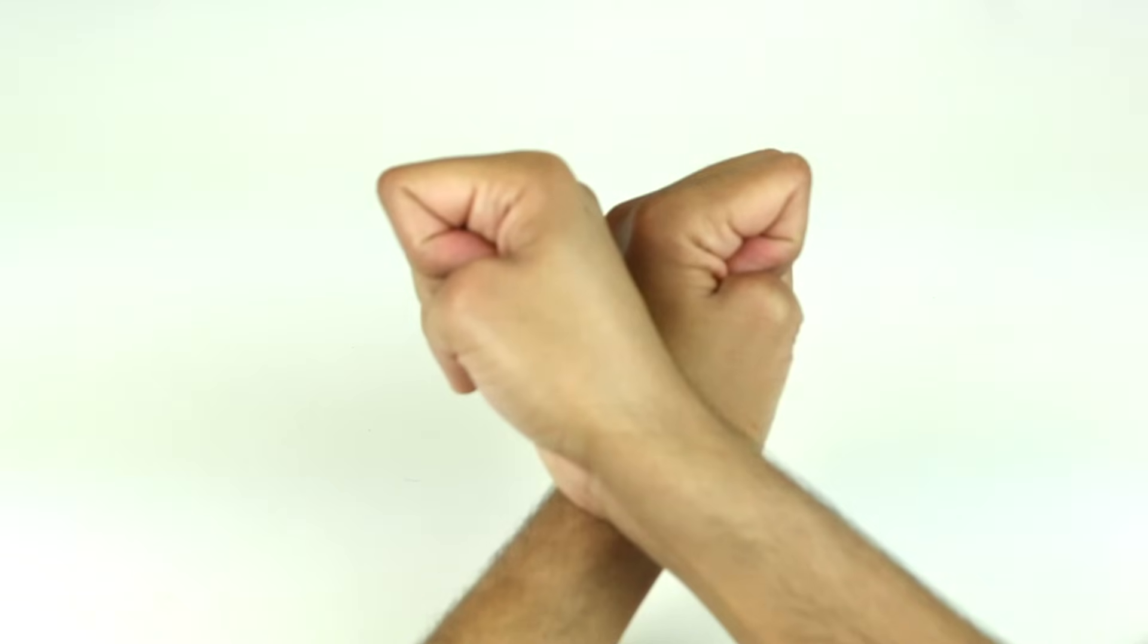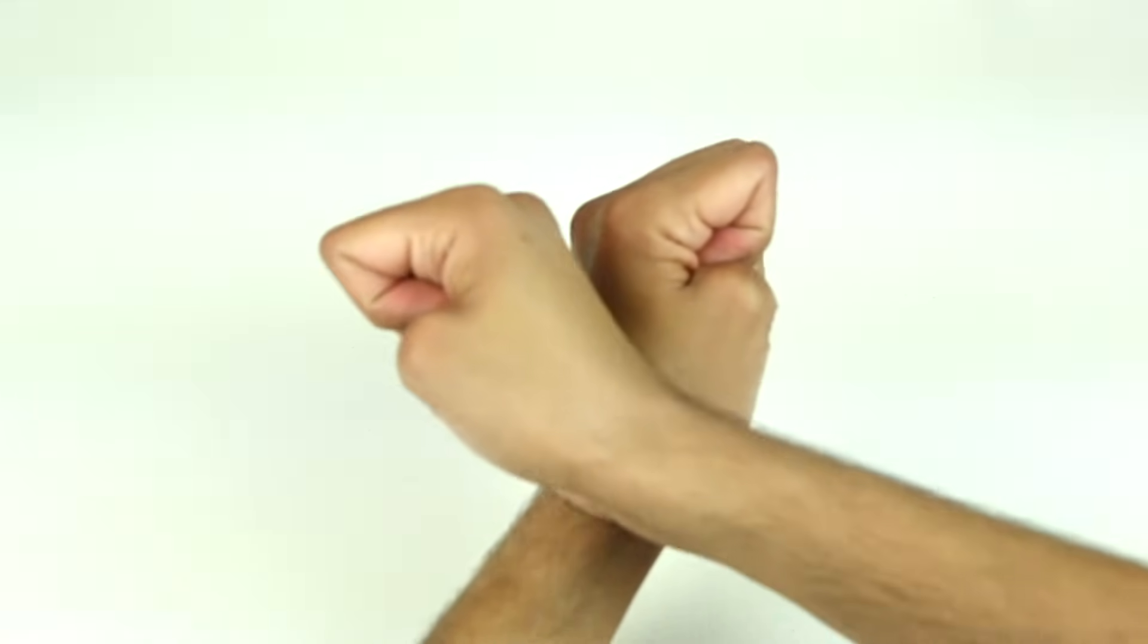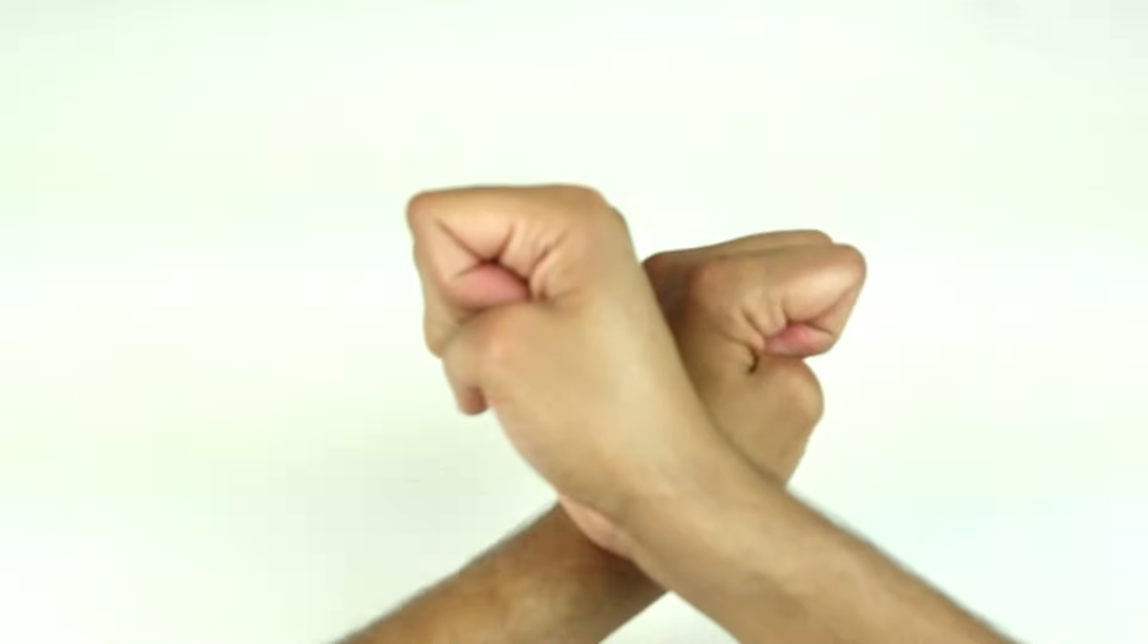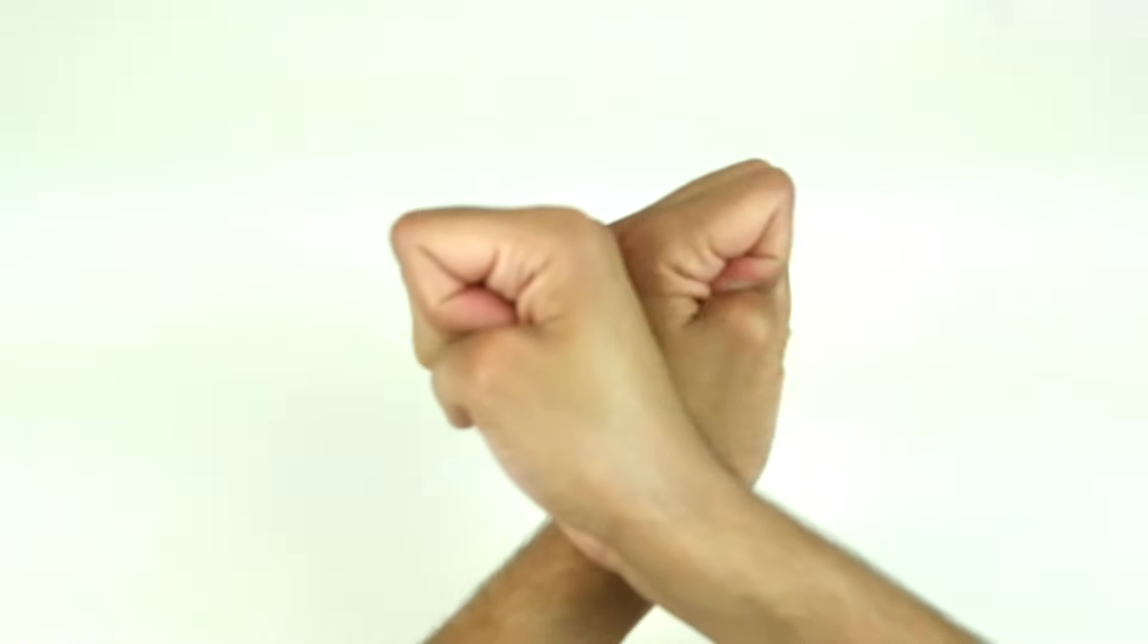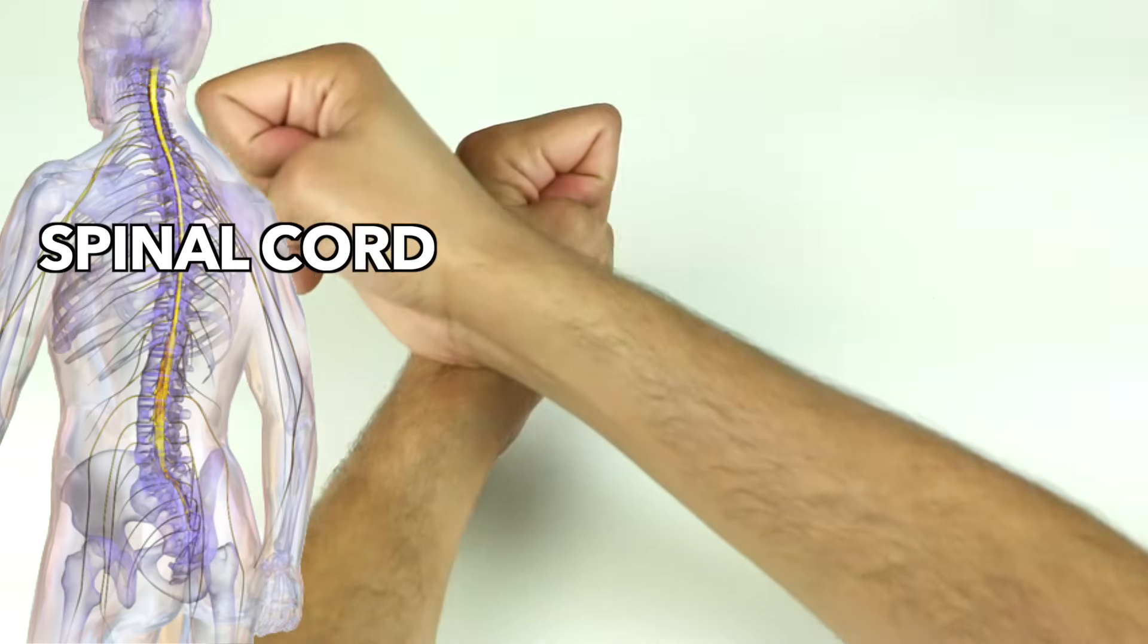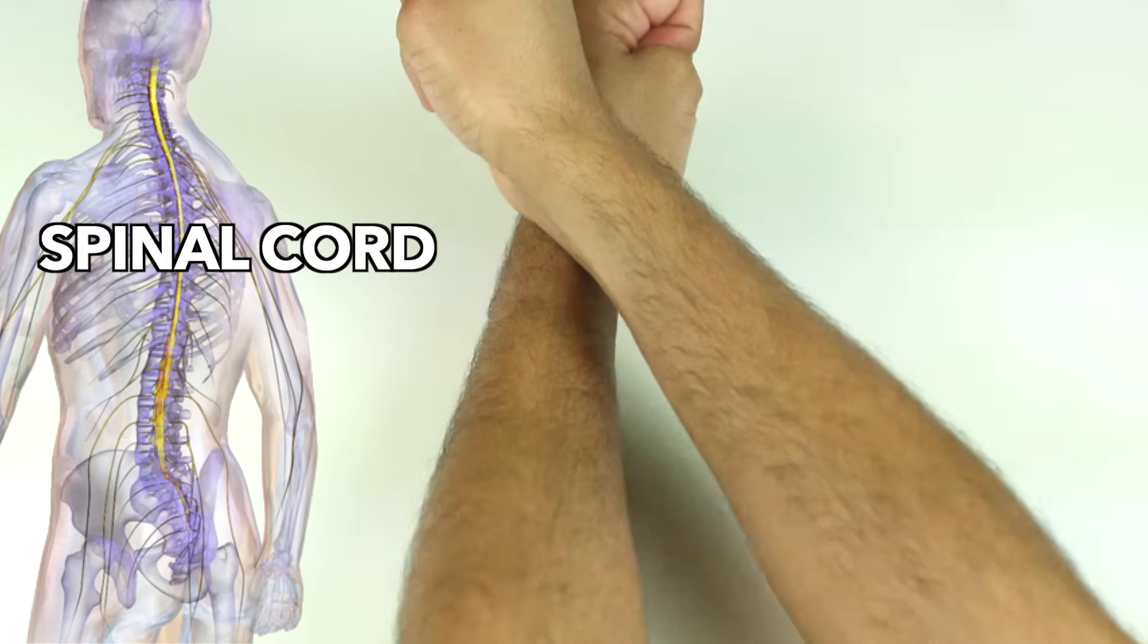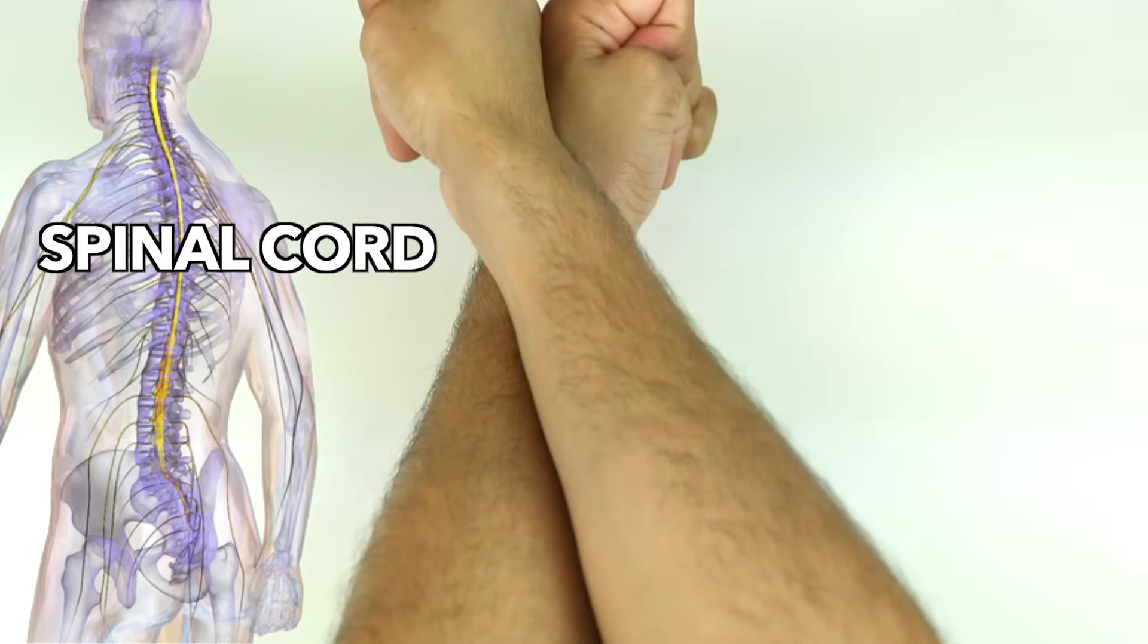This is also where signals from the right side of your body cross over to the left brain, and where signals from the left side of your body cross over to your right brain. Your arms represent the spinal cord. The spinal cord extends down your back. It sends and receives information from the rest of your body.